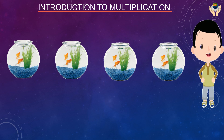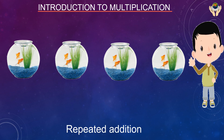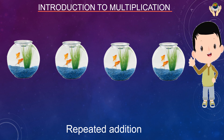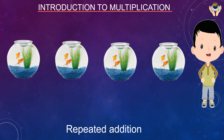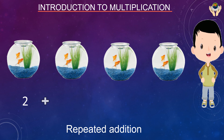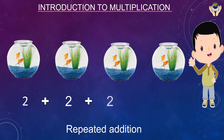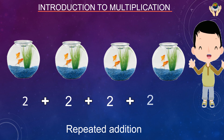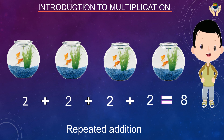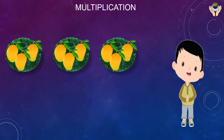Multiplication means repeated addition. There are four bowls and each bowl has two fishes — two fishes in four bowls. We have to add two plus two plus two plus two. The answer is eight.